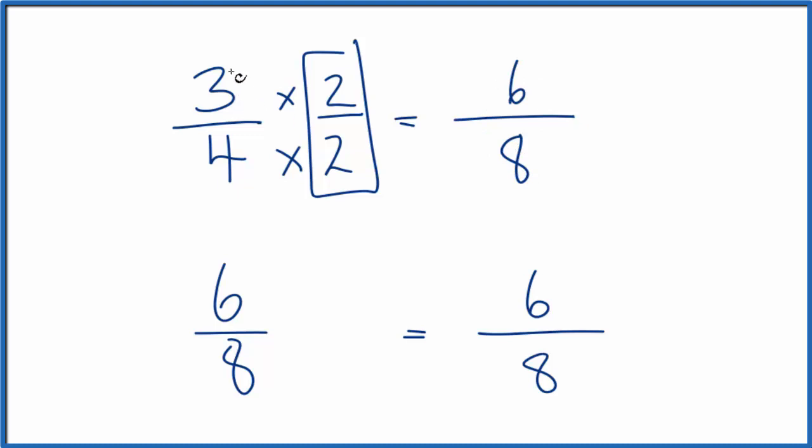Six-eighths, that's the same as three-fourths. And you'll also notice here that when we compare three-fourths and six-eighths, we get the same number. Because of that, these are equivalent. They're called equivalent fractions. They're equal to the same amount.